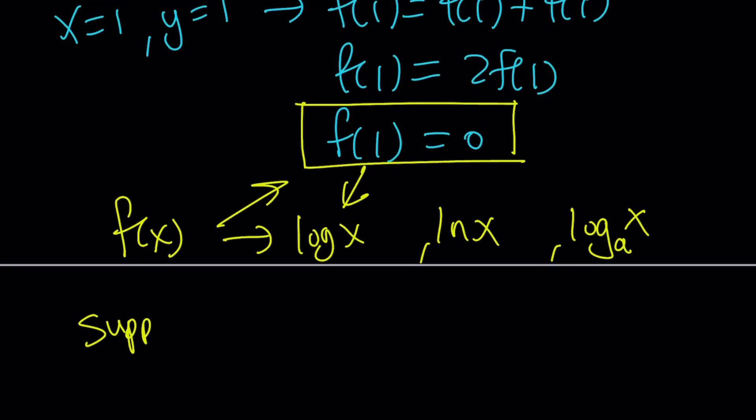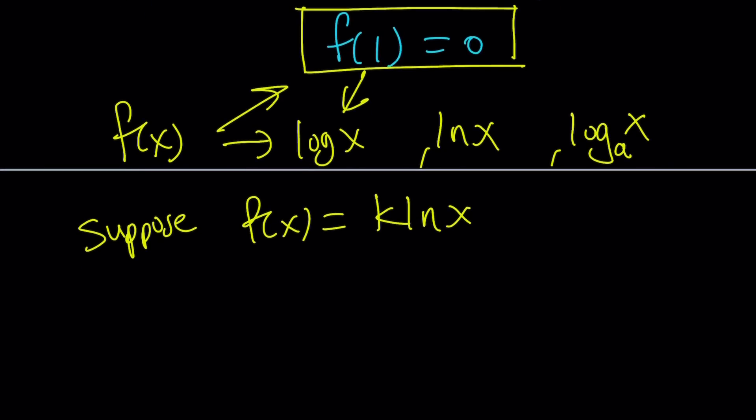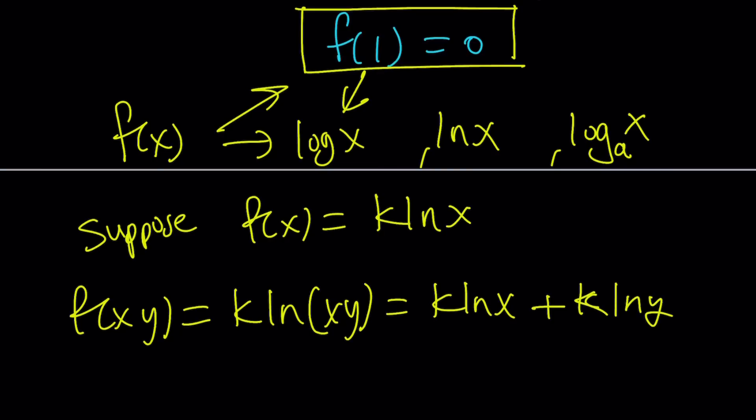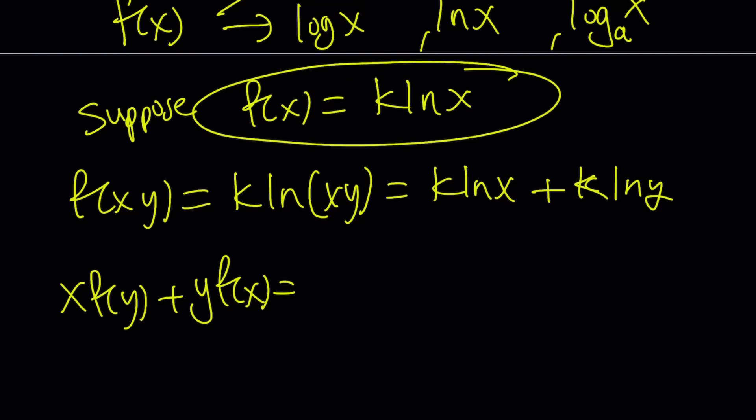Okay, so suppose, and this is an assumption, f of x is equal to k ln x. Why did I use a constant? Because it doesn't matter, right? This basically represents all bases, by the way. Even though I use ln because I like ln. Natural log. So, f of x, y is going to be k ln x, y, which can be written as k ln x plus k ln y. If you use the properties of logs and distribute the k, you hopefully know that rule. And on the right-hand side, I have x f of y plus y f of x. By the way, I'm just checking if this is going to satisfy my equation. Maybe you already know the answer, but wait.